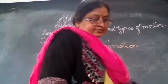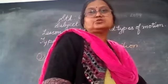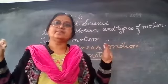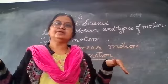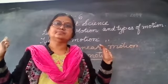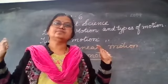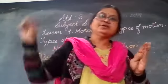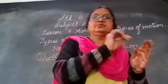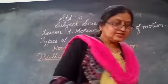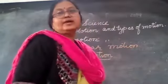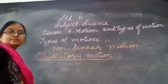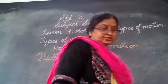Another example is the wings of birds. When birds fly, their wings go up and come down, then go up again. Starting from one point, going to another point, and again going back to the previous one — such type of motion is known as oscillatory motion.